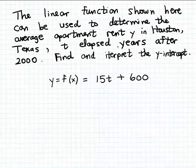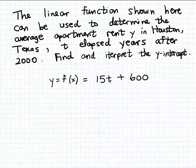In this example, we're given a linear function formula that has a practical application: it can be used to determine the average apartment rent, referred to as Y, in the city of Houston, Texas. T represents elapsed years after the year 2000. So our input quantity is elapsed years, denoted by T, and the output quantity is the average apartment rent in Houston, denoted by the output variable Y.